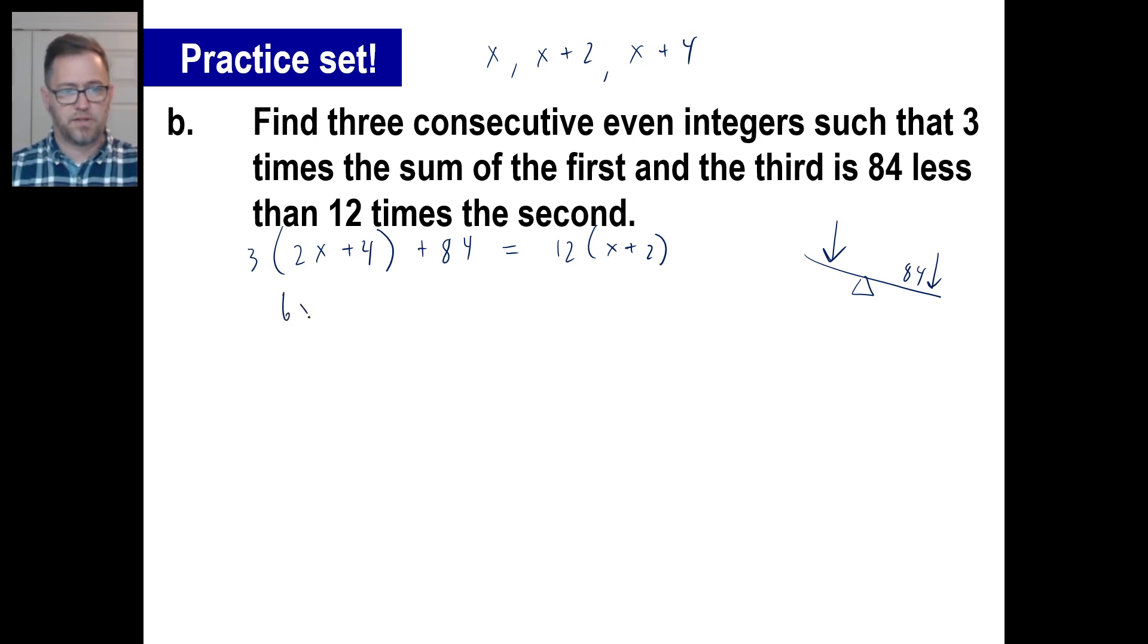So let's take a look. 6X plus, that's a 12. Three times 4 is 12, right? Let's go ahead and put 12 plus 84 is 96. Then over here we have 12X plus 24.